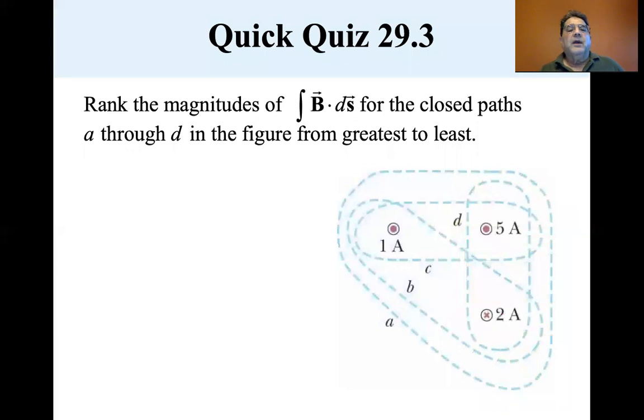So rank the magnitudes of the integral of B dot ds for the closed path a through d in the figure from the greatest to the least. Well, let's see.